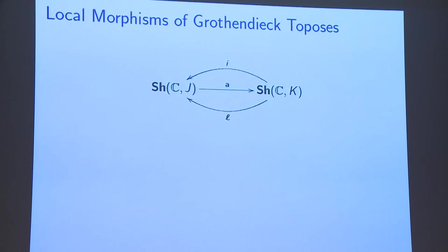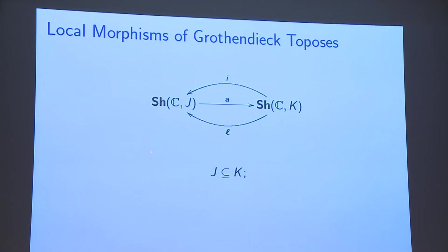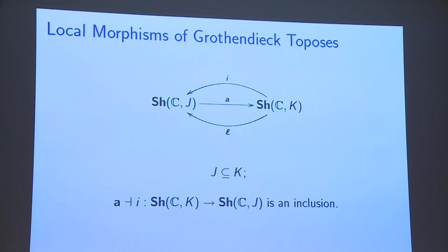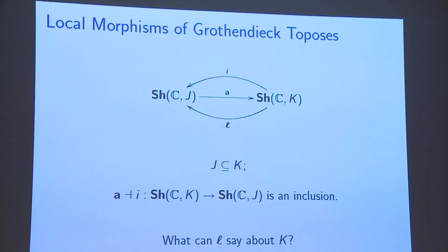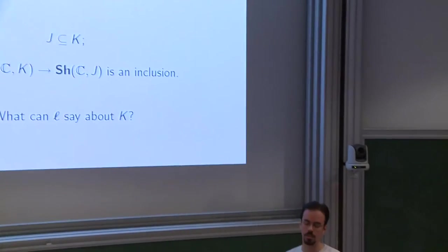When you work with Grothendieck toposes this becomes even simpler to think about, because now I have the same string of adjoints. I've given them different names — the names I'll be using from now on. I is just the inclusion here, A is an associated sheaf functor, and conveniently my left adjoint is L. Since you have an inclusion, you can fix the base category C and just think of a stronger Grothendieck topology on the other topos. The question — the problem of my whole PhD — was: what information is L telling us about K? What extra information can we get out of L, which is a left adjoint preserving finite limits?